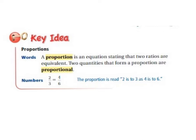Remember to write the example. The numbers 2 over 3 equal 4 over 6. The proportion is read 2 is to 3 as 4 is to 6.